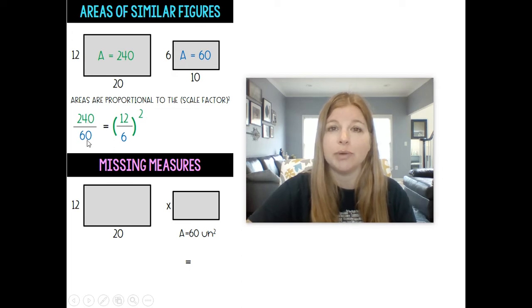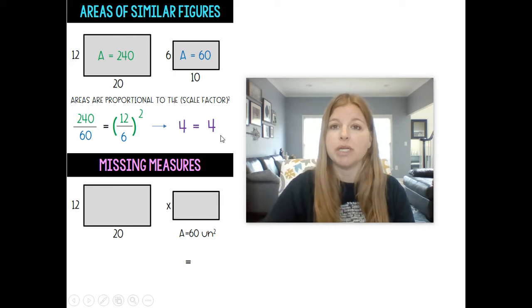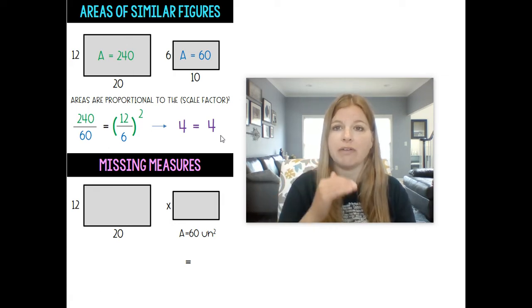Now 240 over 60 is 4. 12 divided by 6 is 2. 2 squared is 4. They're equal to each other. So the ratio of the areas is equal to the scale factor squared.